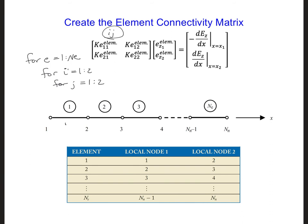And then we can put in the 2 by 2 ke matrix into the k matrix. And we need to put it at i is equal to element connectivity e, i, and at j is equal to element connectivity e, j.